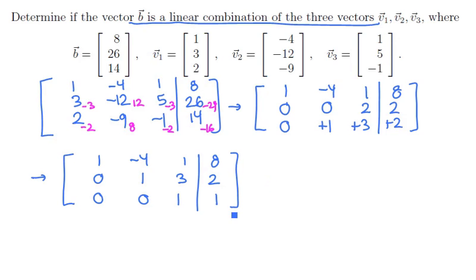Now that we're in row echelon form, we can loop the system back and solve these equations. The bottom states z = 1, row 2 is y + 3z = 2, and the top is x - 4y + z = 8. So if we can solve these three equations, we're going to be able to answer the linear combination question.